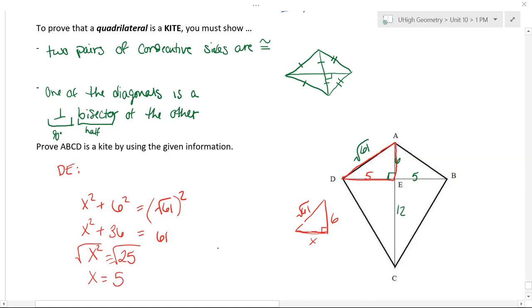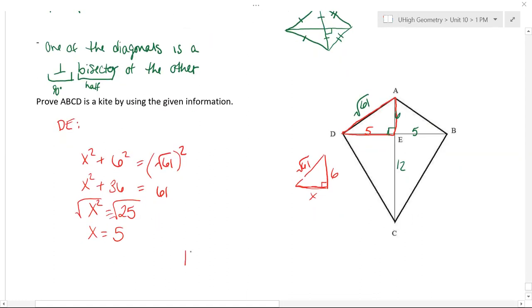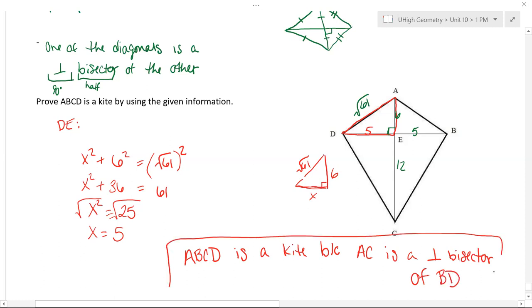And so now I do have that, yes, this is a kite. So I could say ABCD is a kite because AC is a perpendicular bisector of BD. So that is all we need to prove that we have a kite.